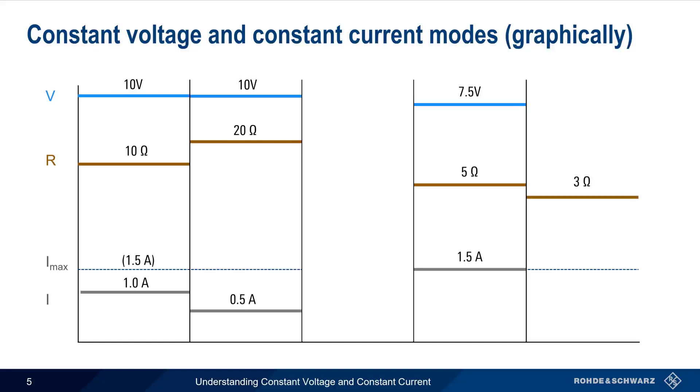And if load resistance dropped again to only 3 ohms, then the supply would lower output voltage again to 4.5 volts to ensure that the output current is limited to 1.5 amps.